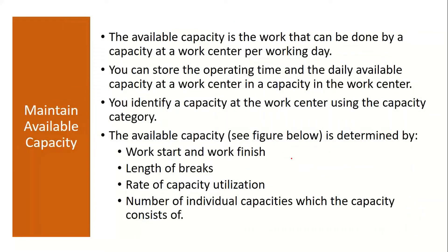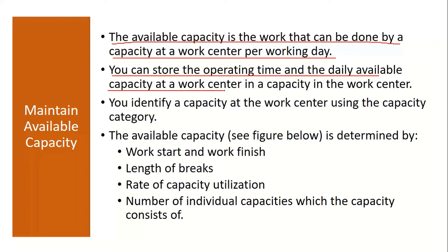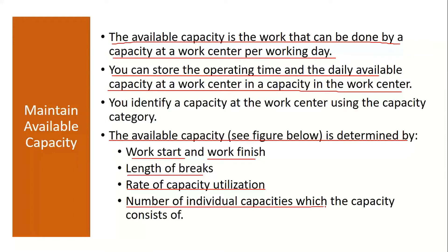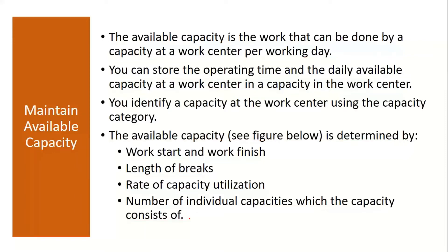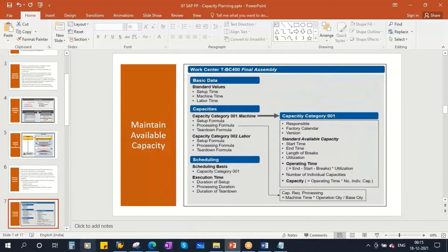The available capacity is the work that can be done by a capacity at a work center per working day — essentially how many hours a particular machine or work center can work. The available capacity is determined by work start and finish time, length of breaks, the rate of capacity utilization, and the number of individual capacities which the capacity consists of.